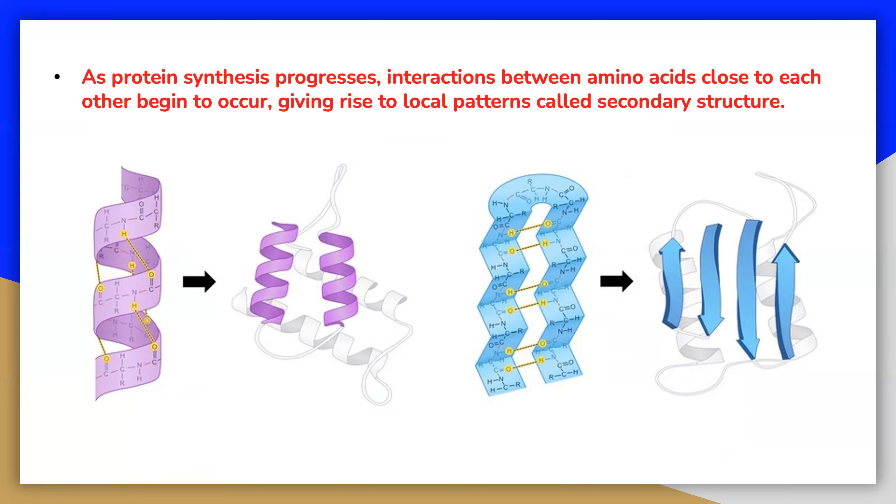As protein synthesis progresses, interactions between amino acids close to each other begin to occur, giving rise to local patterns called secondary structure. The secondary structure forms within a polypeptide due to interactions between atoms of the backbone. These secondary structures include the well-known alpha helix and beta strands. Each structure has unique features. Both structures are held in shape by hydrogen bonds, which form between the carboxyl group of amino acid and amino group of another.